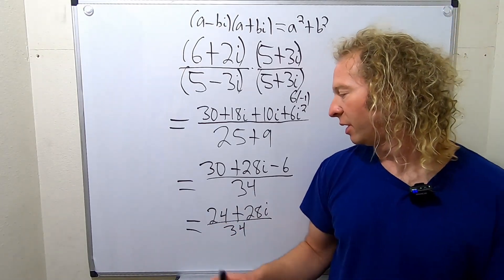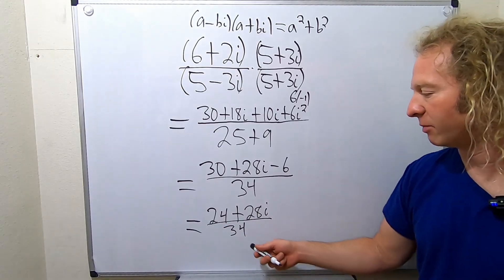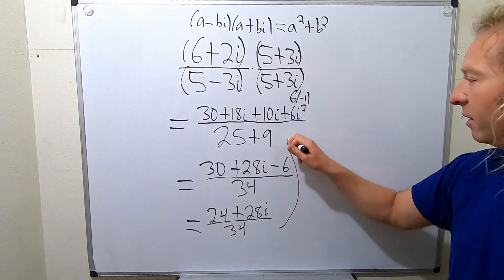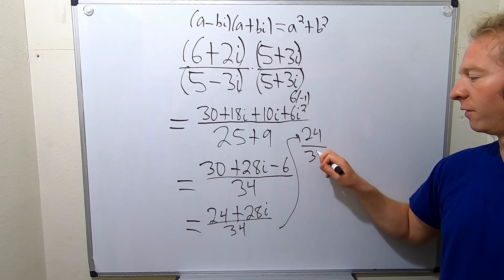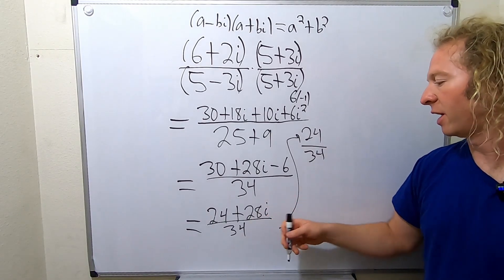The last thing we should probably do is clean this up. So you want to break it up. So it's 24 over 34. I'm going to come up here. So 24 over 34, and then 28i over 34.